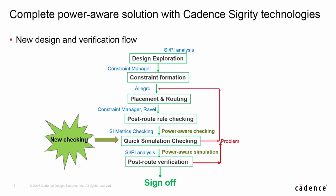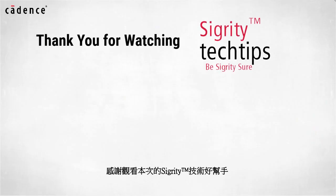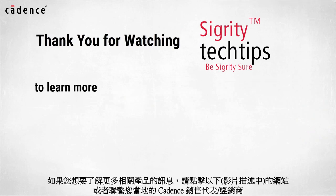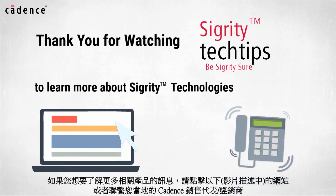Here is the new design and verification flow with power-aware capability. In summary, the constraint-driven flow needs to advance to a new level to account for power-induced noise on signals. Designers should check their current sign-off flow and update it with power-aware functions. Cadence Sigurity tools can help to achieve that goal. Thank you for watching another edition of Sigurity Tech Tips. For information on products used in today's video, click on the links below or contact your local Cadence Sales Representative or Cadence Channel Partner.